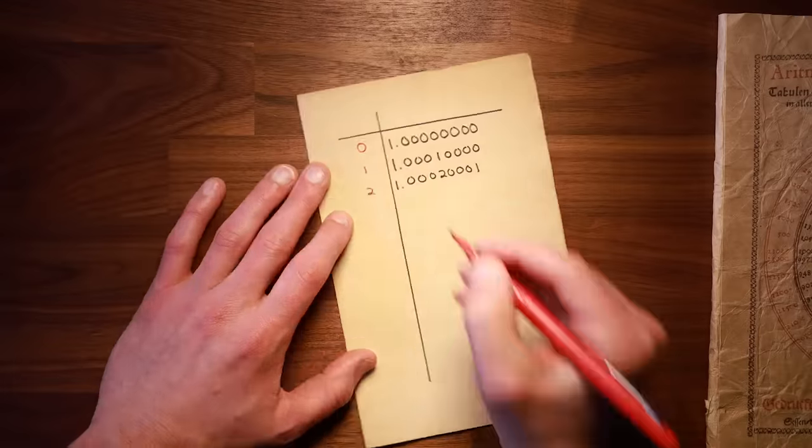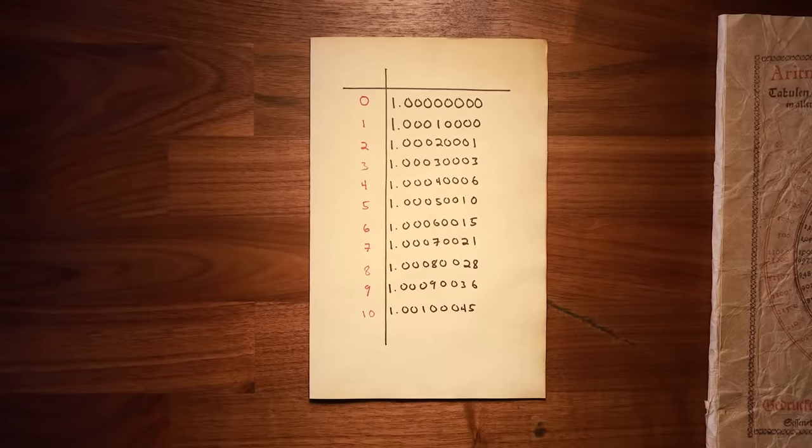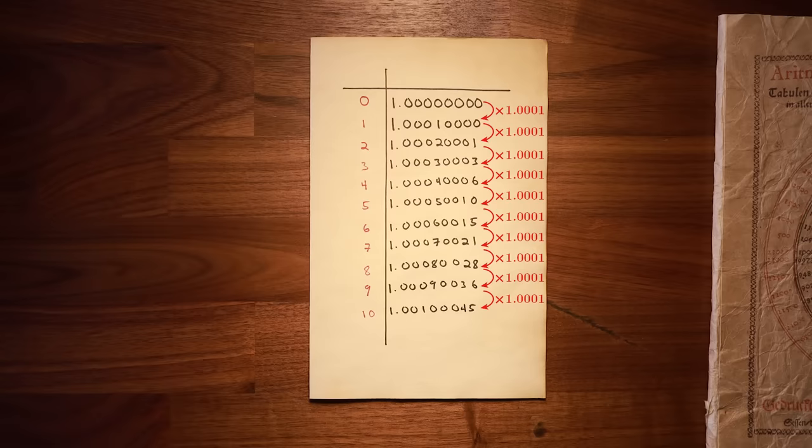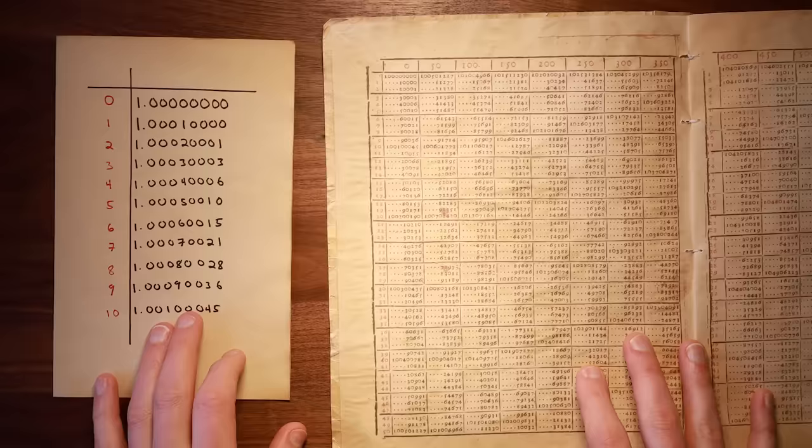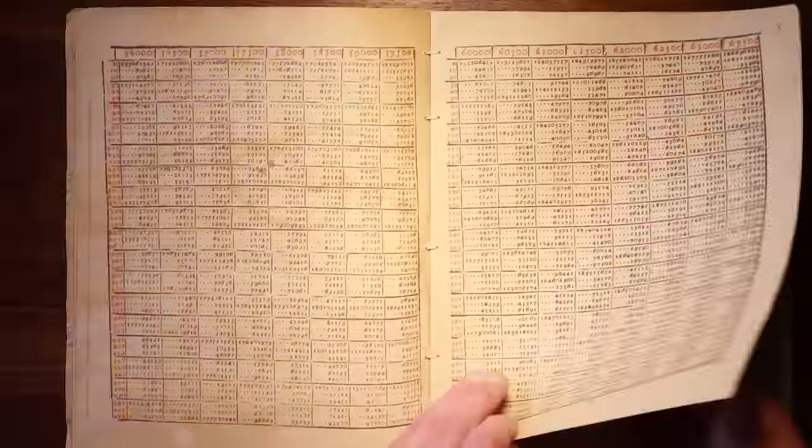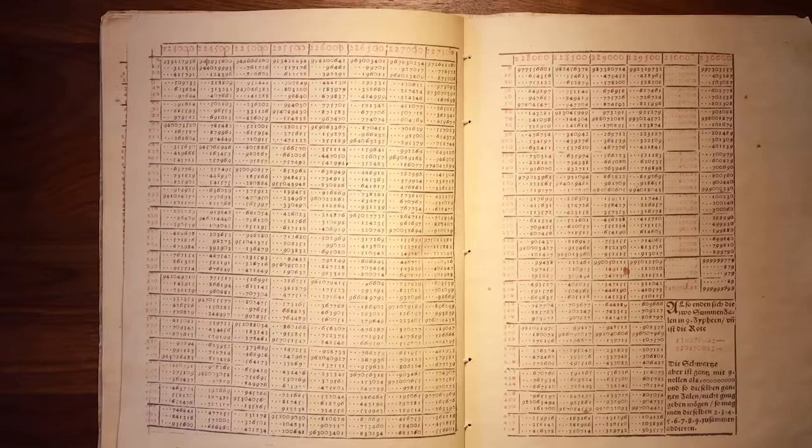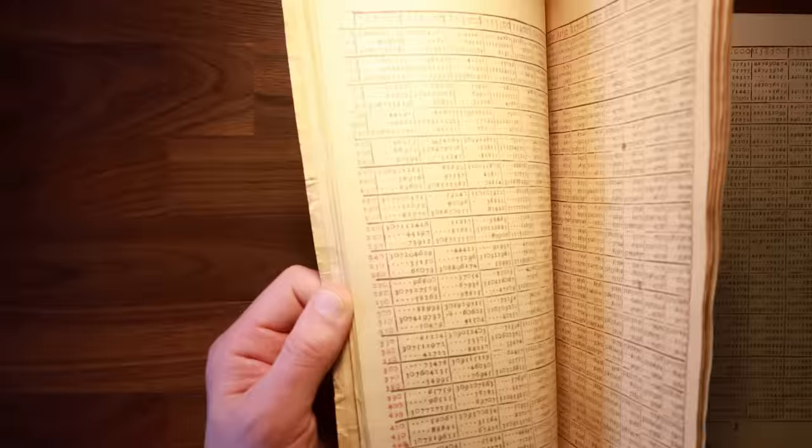Berge's hack works by constructing an enormous table of numbers, where each number is simply the previous number times 1.0001. Starting at 1 and repeating this operation again and again, Berge computed 23,027 individual numbers with 9 digits of precision, stopping at a final value of 10.